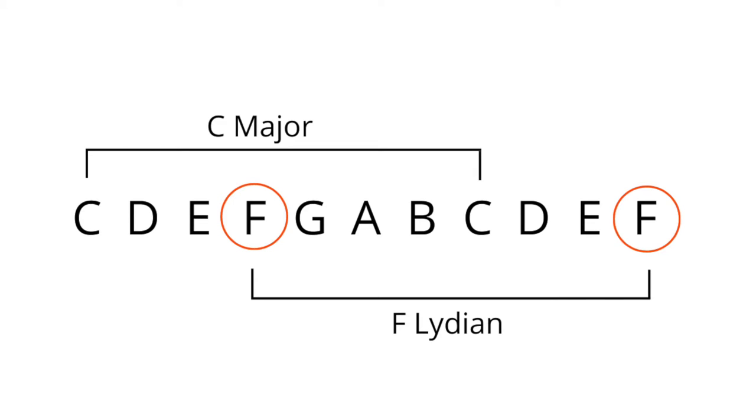Lydian is the fourth mode of the major scale, and we're going to have a look at F Lydian here to explain this. F Lydian is the fourth mode of C major — if we count up from C, D, E, F is the fourth note. F Lydian and C major have the same notes. However, they are not the same key or the same sound, because the emphasis when we play in F Lydian is put on the F note. That's the tonic, and that changes everything versus C being the tonic when we are playing C major — same notes, but different sound.